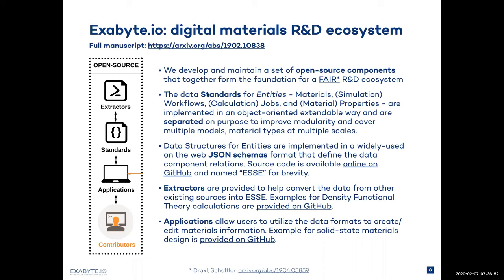When we speak about the standards, we identify a certain set of entities like materials, simulation workflows, calculation jobs, and materials properties. All of these are implemented in an object-oriented way, separated on purpose to improve modularity. Data structures for the entities are implemented in JSON schemas format, and they can be used by Python and JavaScript applications by utilizing some of the open source code we have deployed today.